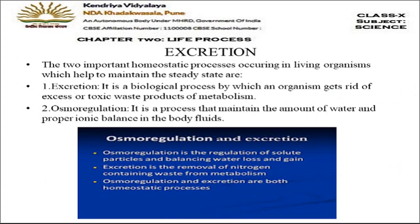Phloem cells are in close contact with the mesophyll cells of leaves. Soluble food enters the phloem and is transported upward, downward, or in lateral directions. Food from the leaf enters the phloem sieve tubes and passes through connected cells, reaching all parts of the plant. This process of food transportation from leaves to all other parts of the plant is called translocation.